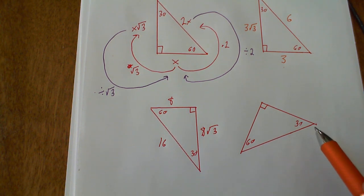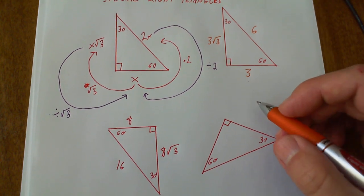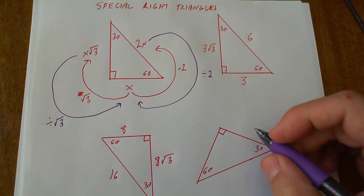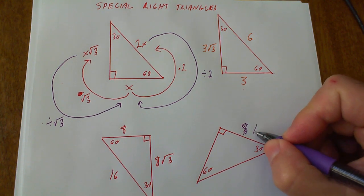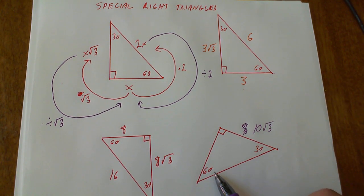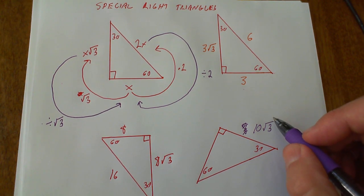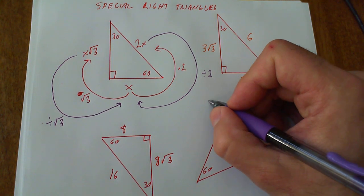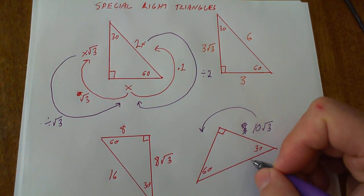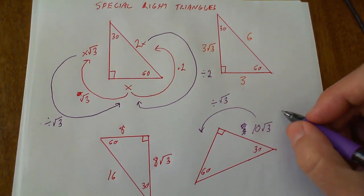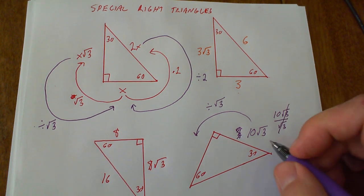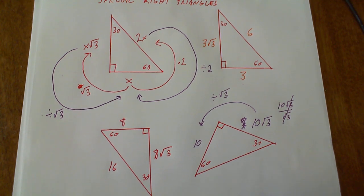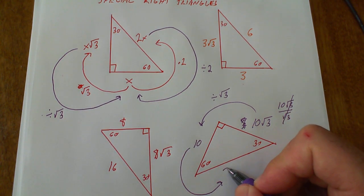Let's say I'm given the 60 as ten times the square root of three — that's my longest leg. To find my shortest leg, I divide by the square root of three. So it's ten root three divided by root three — those cancel and I get ten as my 30. Now that I have that, I can find my hypotenuse by multiplying by two and I get 20.